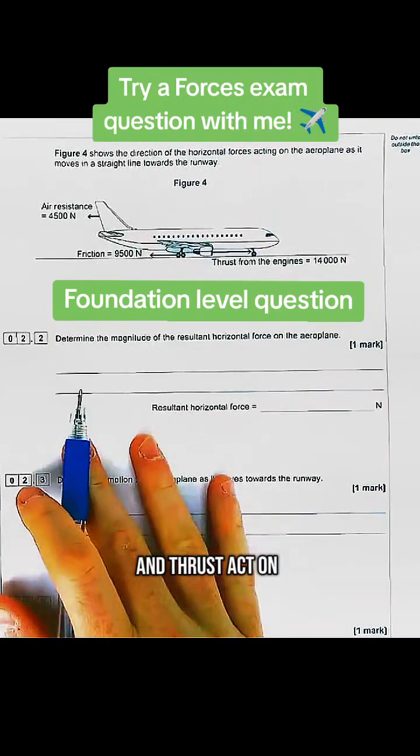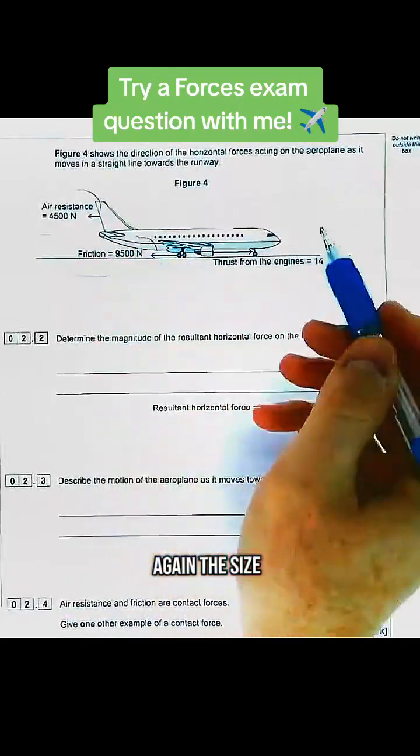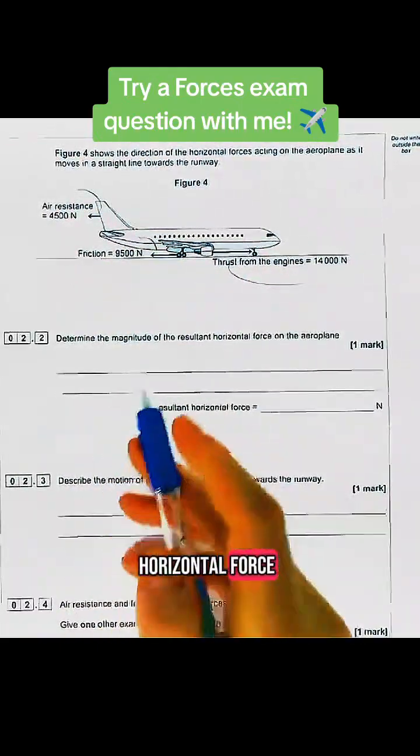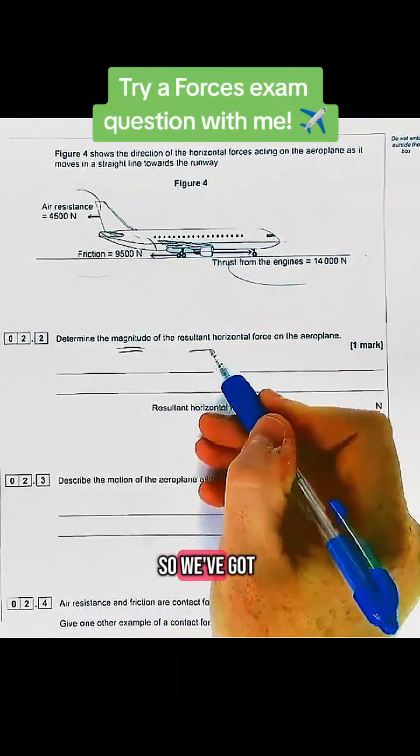Air resistance, friction, and thrust from the engines. We need to work out the magnitude, the size of the resultant horizontal force. Horizontal meaning side to side. We've got thrust in one direction.